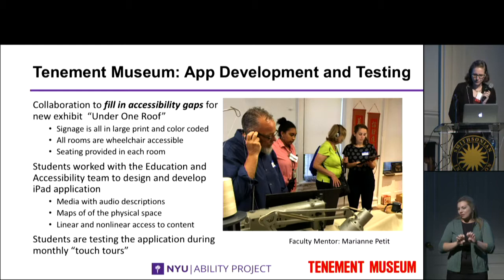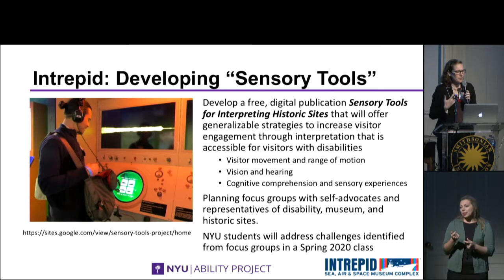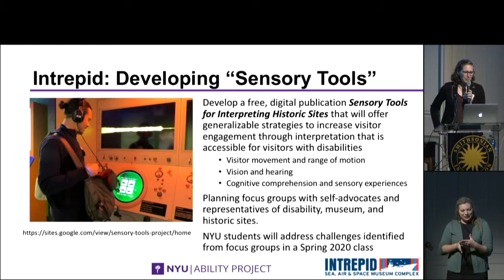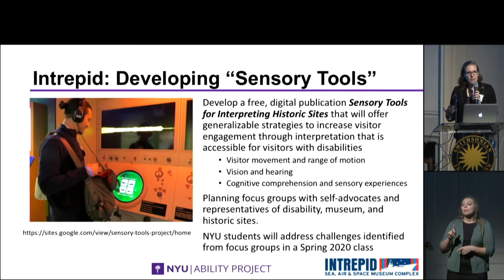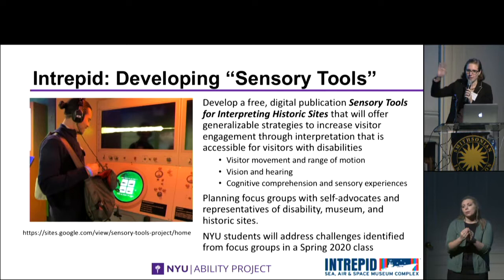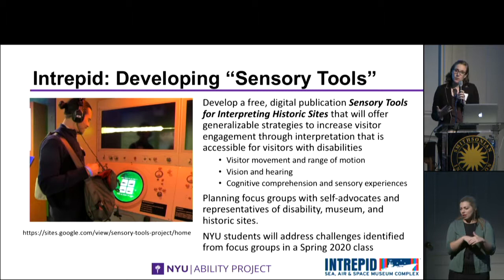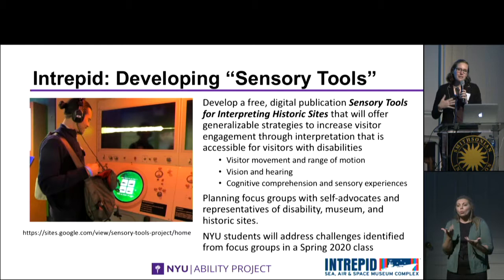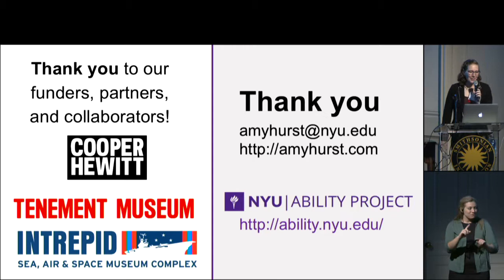The final example is a new collaboration with the Intrepid Museum through a new IMLS grant. At the bigger end of collaboration, we want to create a digital publication to summarize what can be done to help make interpretation of historical sites more accessible, thinking about many diverse groups. We're currently in the phases of planning focus groups with both experts in accessibility, museum attendees, and staff to understand current gaps, and then we'll have a class that focuses on prototyping different kinds of solutions. I think I've gone over my ten minutes, so thank you all for listening, to our collaborators and funders, and I'm looking forward to the discussion.